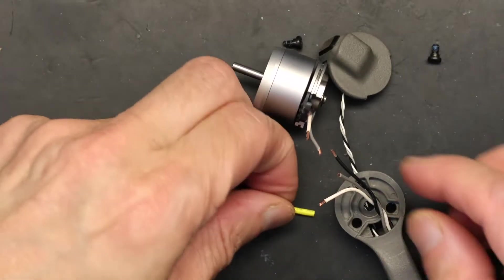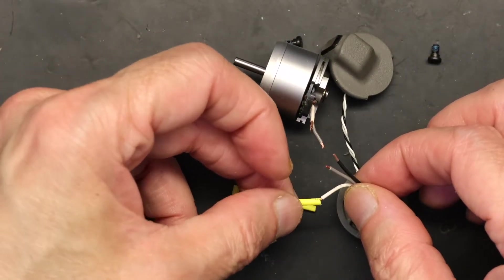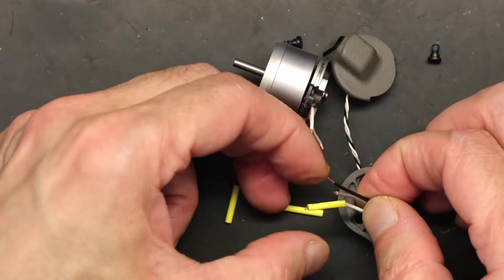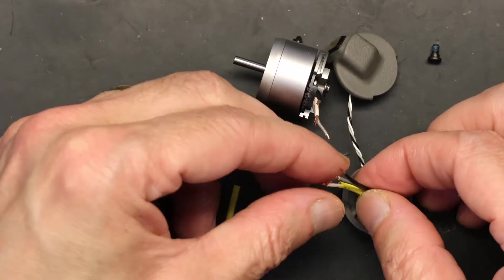Heat shrink tubing is extremely important because you don't want these wires to short out, because if they do short out in the middle of the air, a two thousand dollar drone is down the drain.